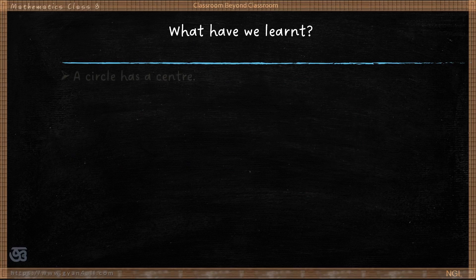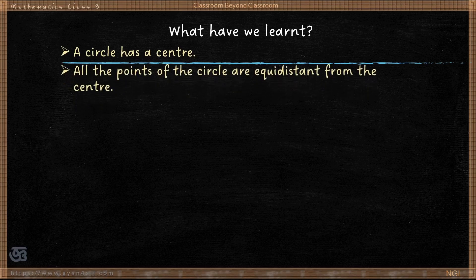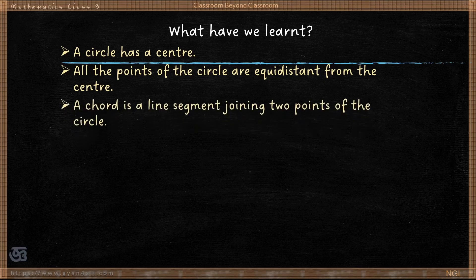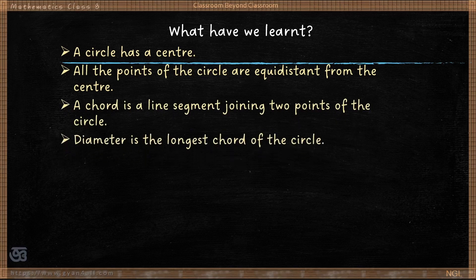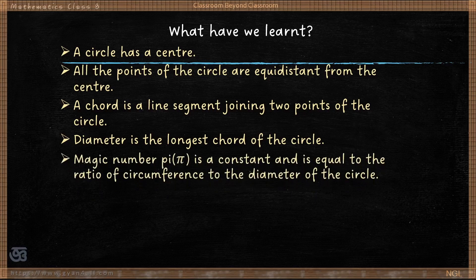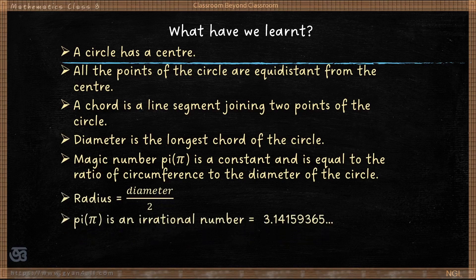To summarize what we have learned: a circle has a center, and all points of the circle are equidistant from the center. A chord is a line segment joining two points of the circle. The diameter is the longest chord and passes through the center. The magic number pi is a constant equal to the ratio of circumference to diameter. Pi is an irrational number with value 3.1415..., an infinite non-recurring decimal, while 22/7 is its approximate rational value.